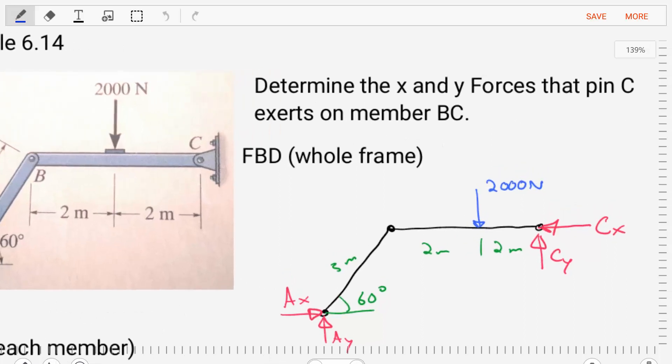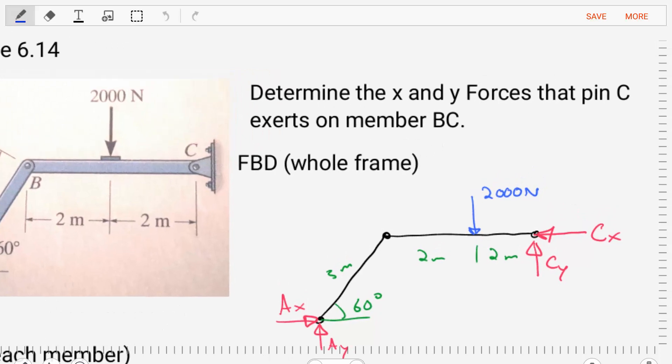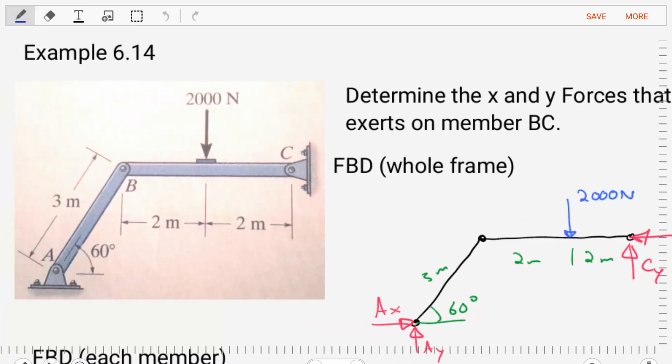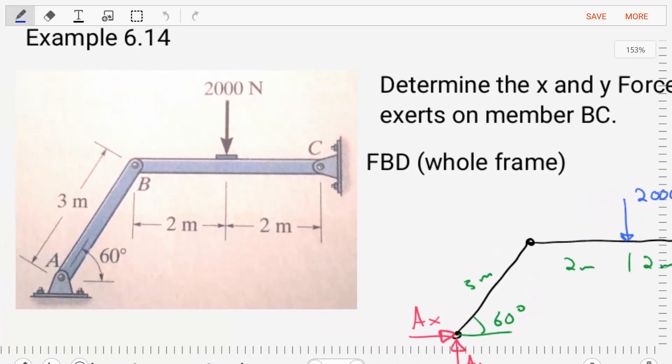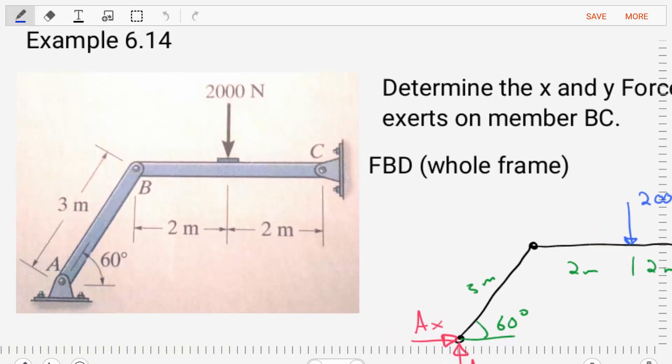This example asks us to determine the X and Y forces that pin C exerts on member BC. Now let's look at the diagram to get an understanding of what those forces are. So we have this frame that consists of two members, member AB and member BC.